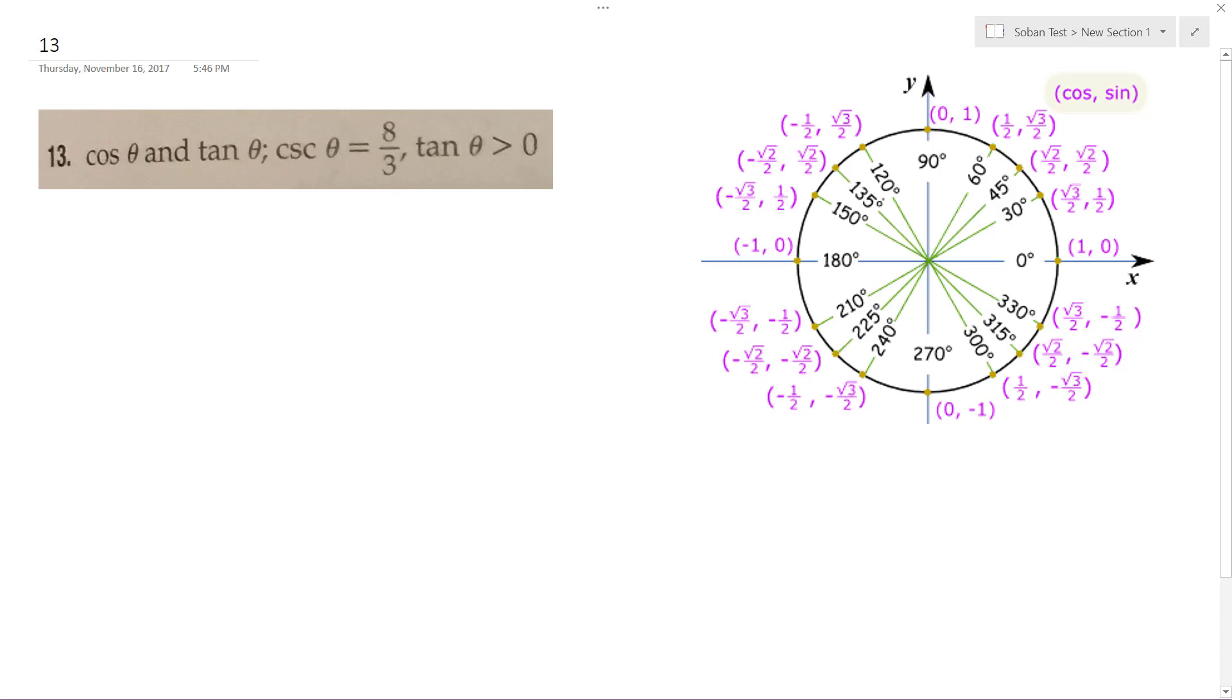So tangent is greater than 0, and cosecant, which is essentially 1 over sine, is positive. That means this is in quadrant 1.